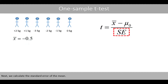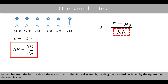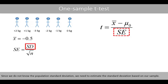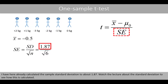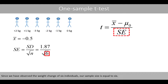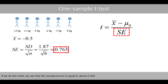Next, we calculate the standard error of the mean. Remember that it is calculated by dividing the standard deviation by the square root of the sample size. Since we do not know the population standard deviation, we need to estimate the standard deviation based on our sample. I have here already calculated the sample standard deviation to about 1.87. Watch the lecture about the standard deviation to see how this is calculated. Since we have observed the weight change of six individuals, our sample size is equal to 6, and the standard error is equal to about 0.763.